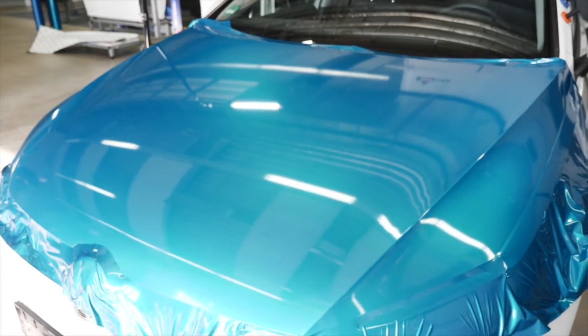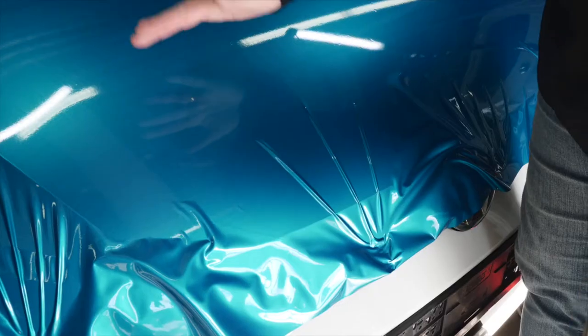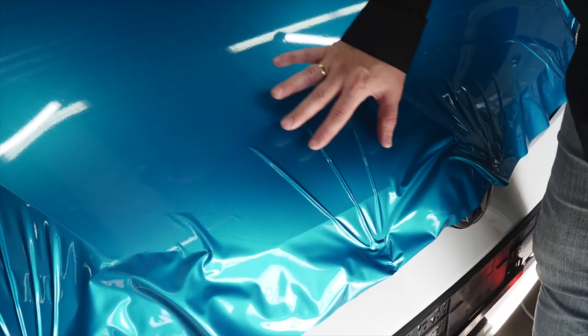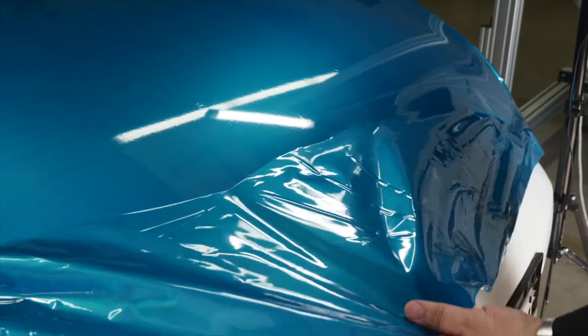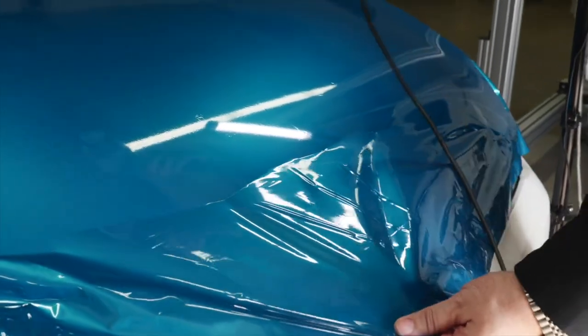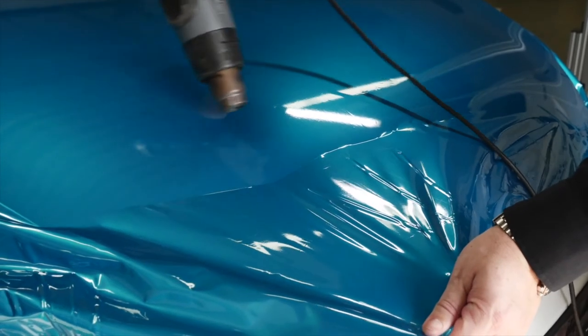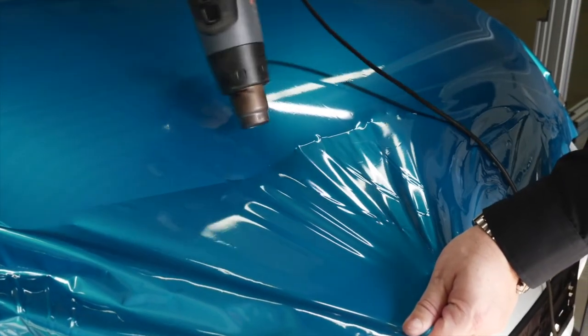Typically, using the conventional method, you start application on the flat part. This can lead to wrinkles on the curved surface at the front of the bonnet. To remove the wrinkles, lift the film, apply heat and reposition it on the bonnet.